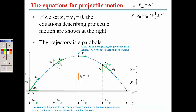For a projectile, we can treat this similarly: if we fire a ball up with some initial velocity, we can break it up into its x-components and y-components and treat them separately, knowing that the acceleration in the x-direction is equal to zero, and the acceleration in the y-direction is going to be downward at 9.8 meters per second squared, downward implied by the negative sign.